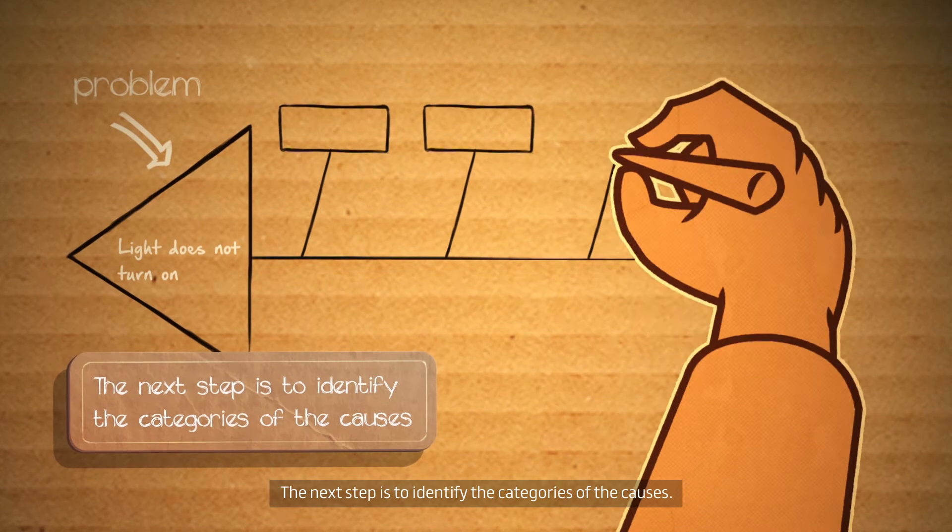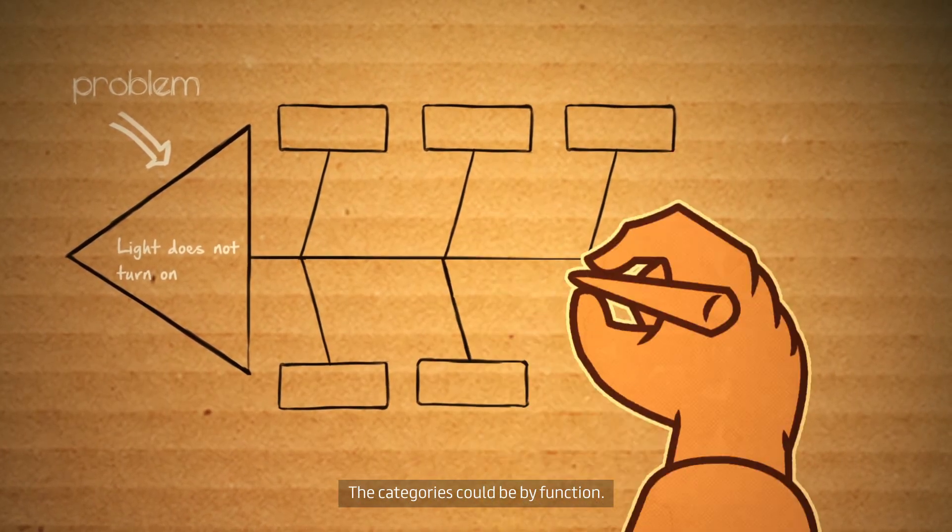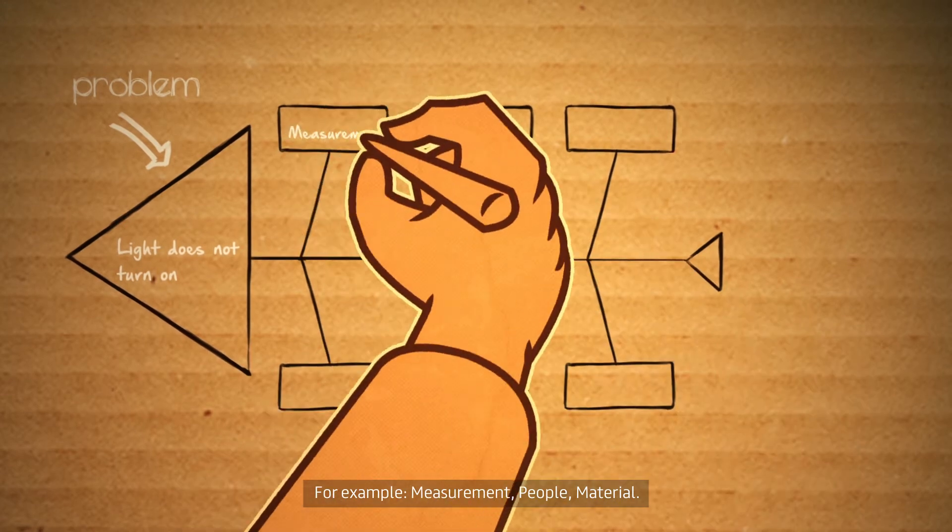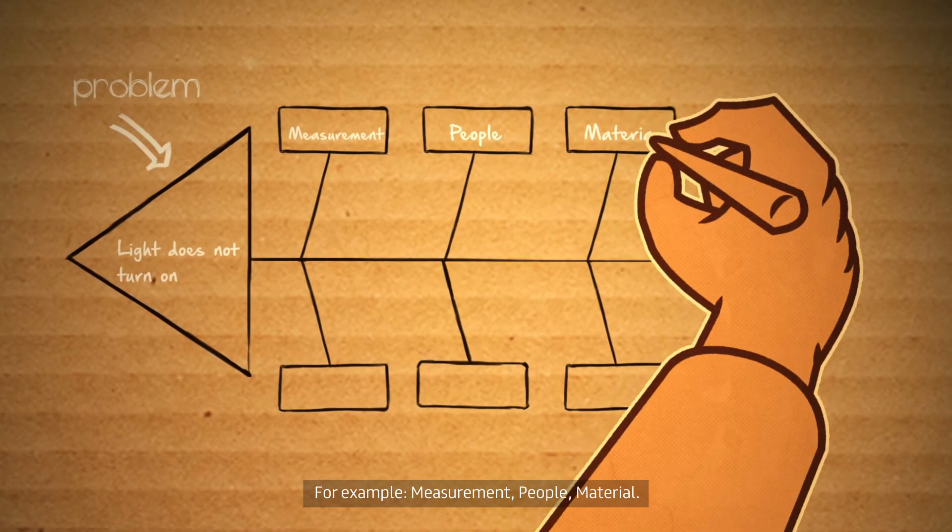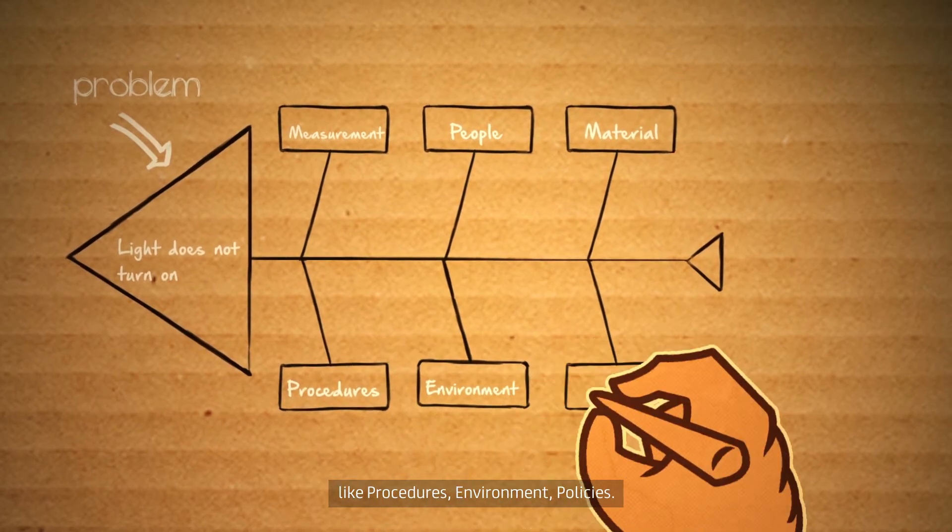The next step is to identify the categories of the causes. The categories could be by function, for example, measurement, people, material. Or they can be process-oriented, like procedures, environment, policies.